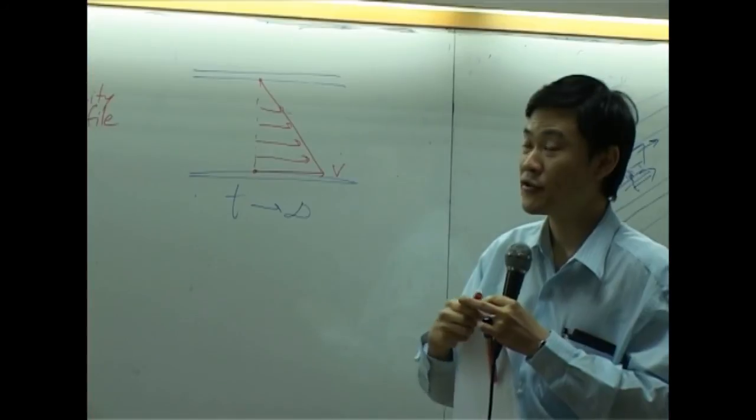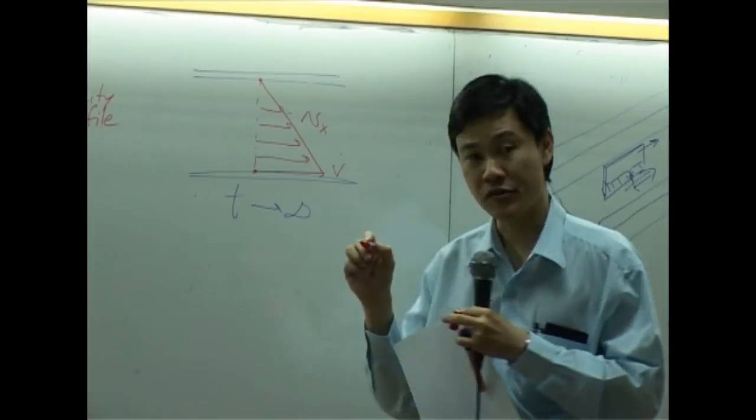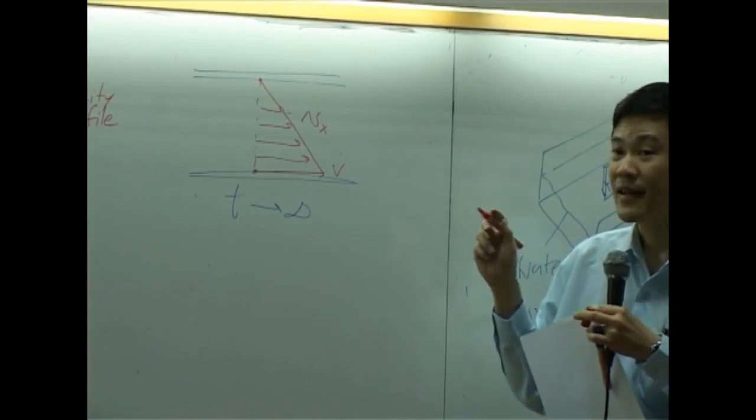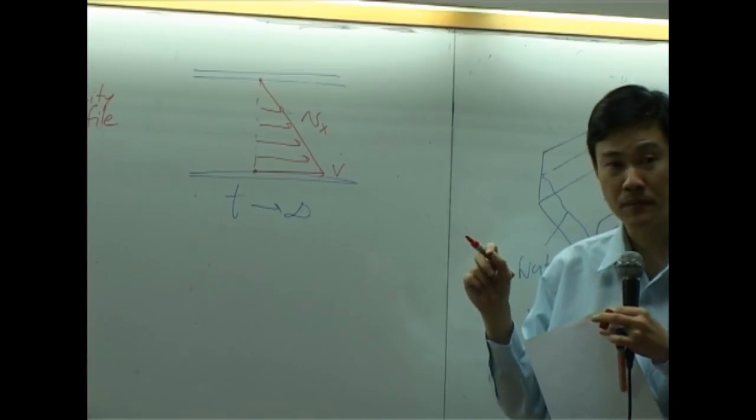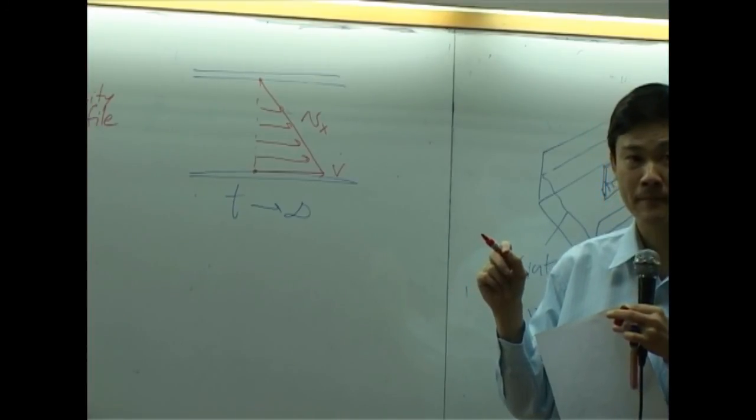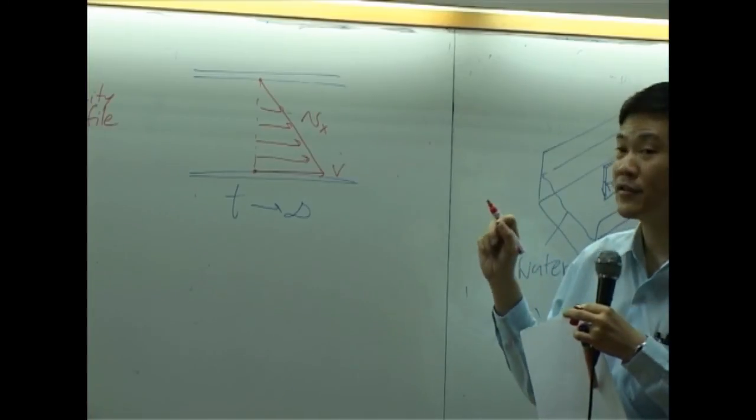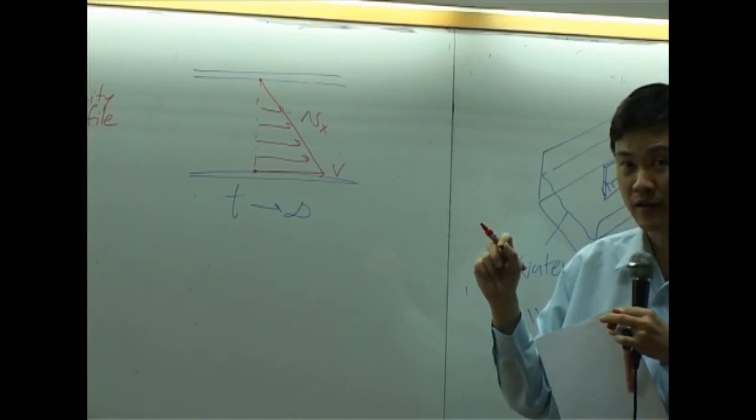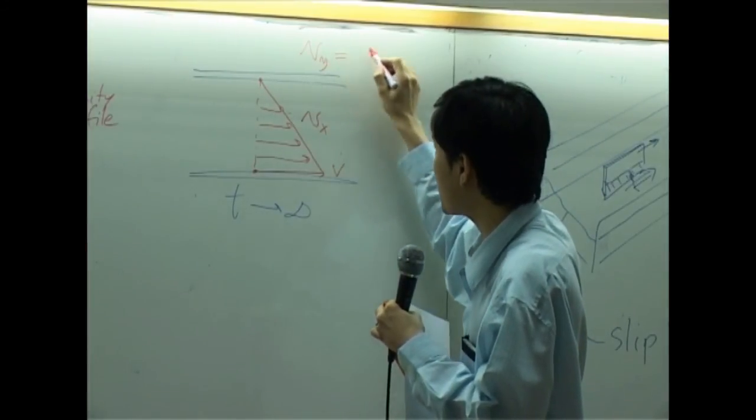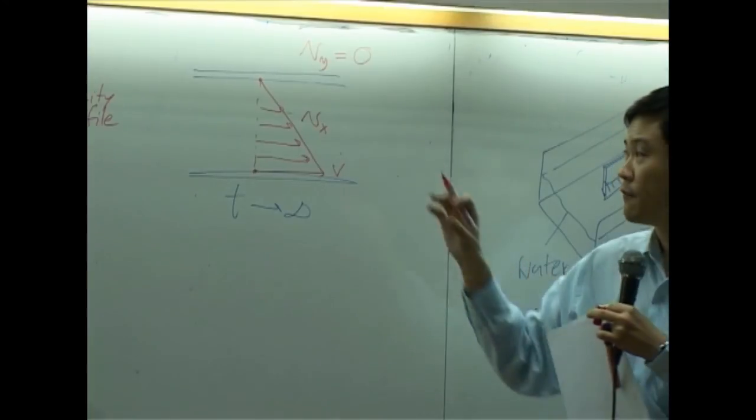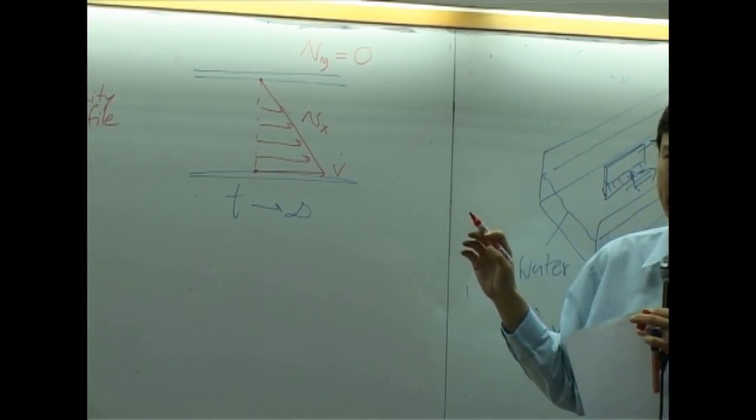Water should have velocity in X direction. Does it have velocity in Y direction? No. There is no Y velocity, right? So, I can say that velocity in Y direction equal to zero. Velocity in X direction is not zero.